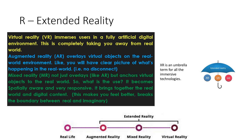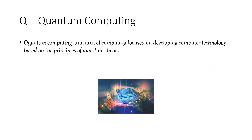Q is Quantum Computing, which is an area of computing totally focused on developing computer technologies and systems based on quantum theory. This is an area where a lot of research papers are coming in and more PhDs are being produced. If you want to do a PhD, this could be a great area to choose based on your interest.